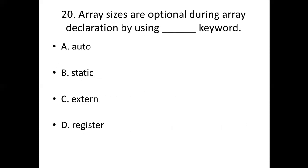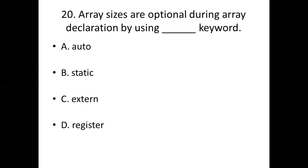Twentieth bit: Array sizes are optional during array declaration by using the — keyword. Option A: auto. Option B: static. Option C: external. Option D: register. Answer: Option C, external.